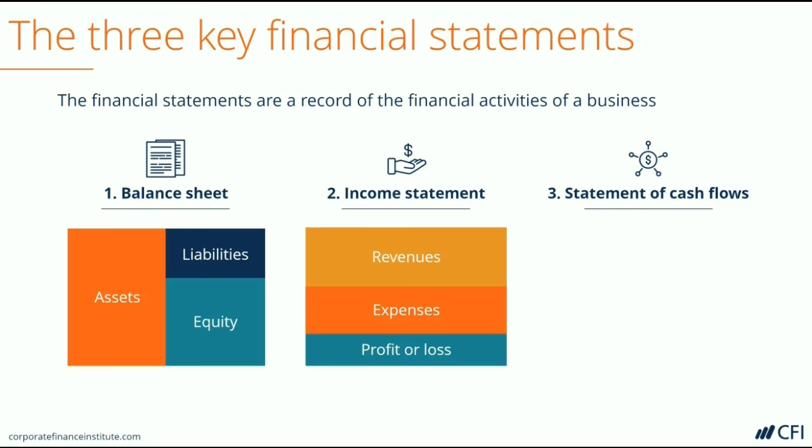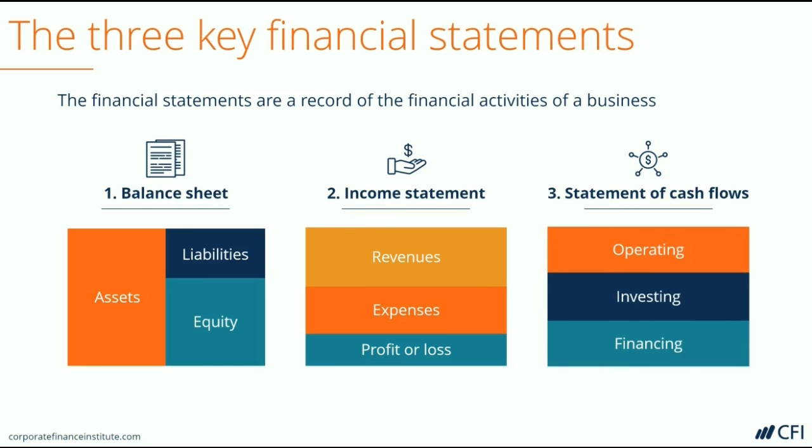The statement of cash flows, or cash flow statement, shows the actual cash movements of a business. It shows how much cash the company has brought in and how much it has paid out, organized into three categories: cash from operating activities, cash from investing activities, and cash from financing activities.